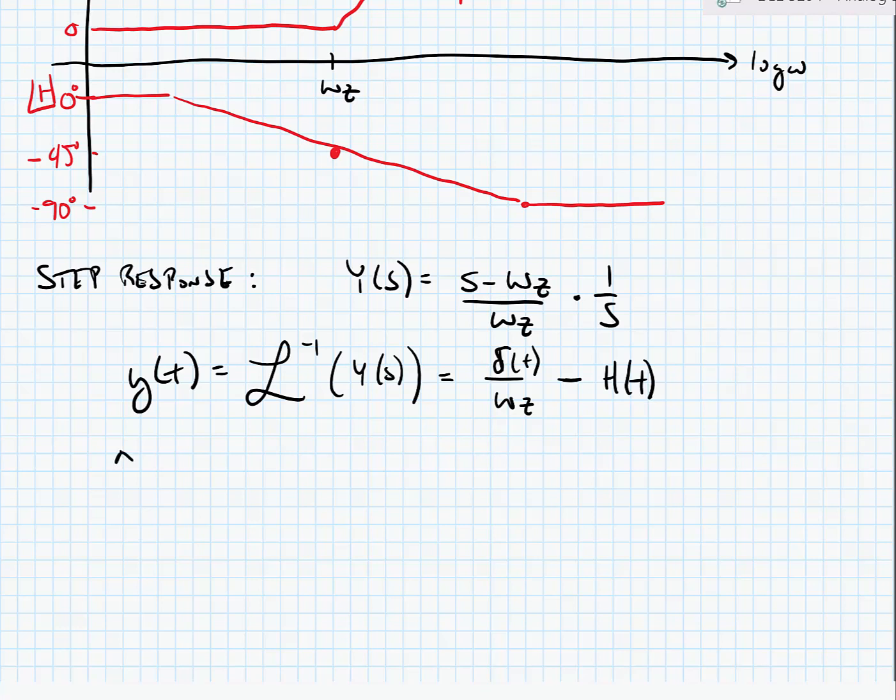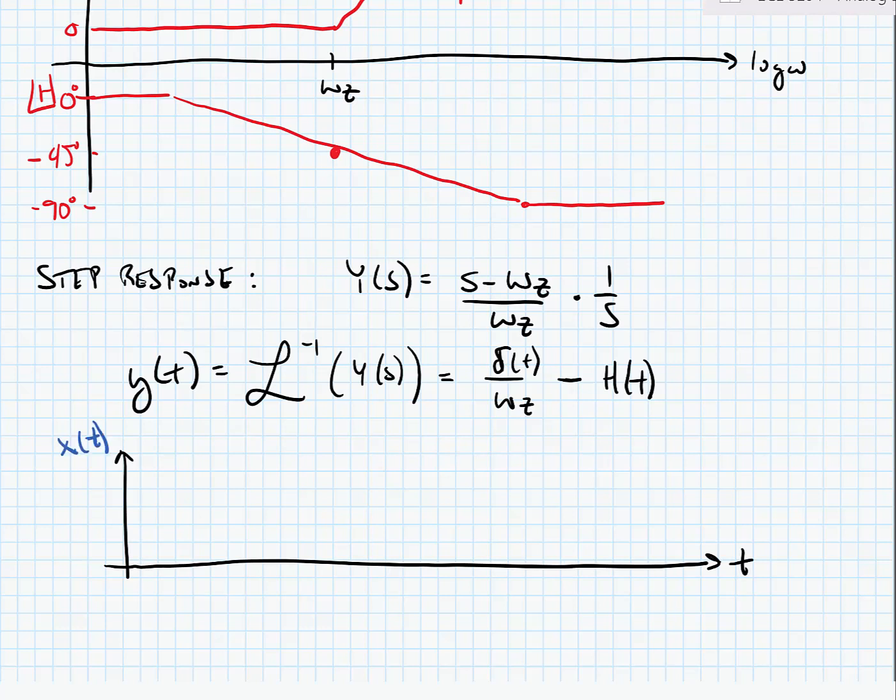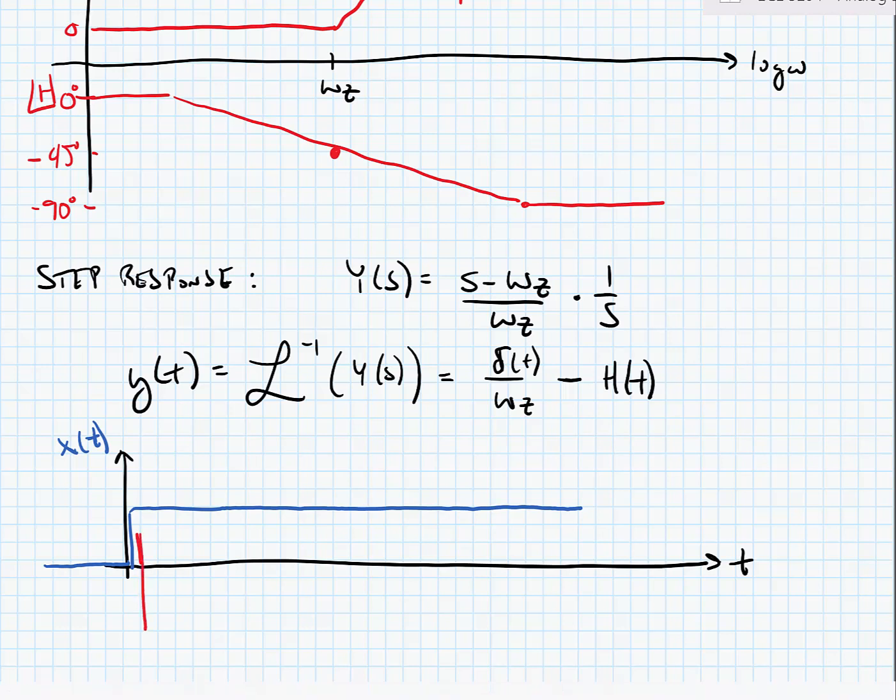Now if we plot this, we have our input step. At x(t), we're going to have an impulse that's equal to delta t divided by omega z. And then we're going to have a negative step. So we should get an output that looks something like this. It will go up a little bit and then down and then stay constant.